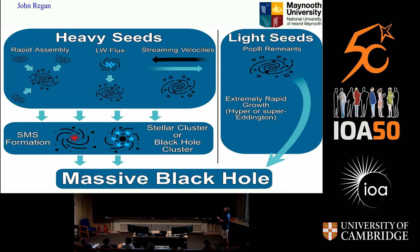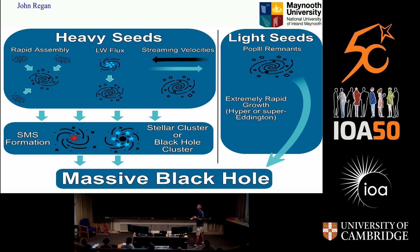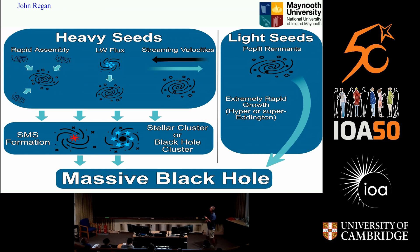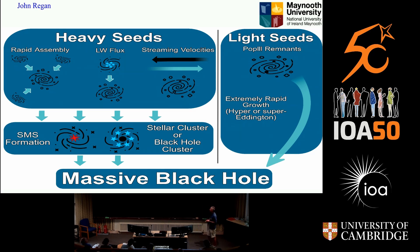If we have light seeds, these should be the remnants of Population III stars — the first generation of stars. If they are to become the massive black holes at the centers of galaxies, they must grow very, very quickly. They have to reach 10^9 solar masses for a quasar, or even 10^7 for a JWST black hole. Growing at Eddington rates is probably not going to work; you need hyper or super-Eddington growth rates at least.